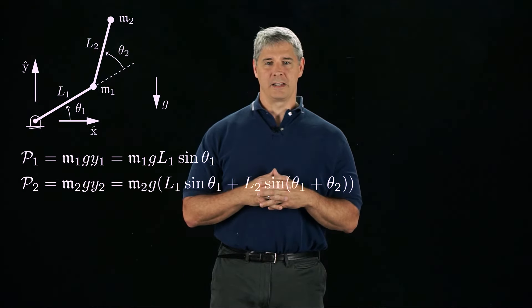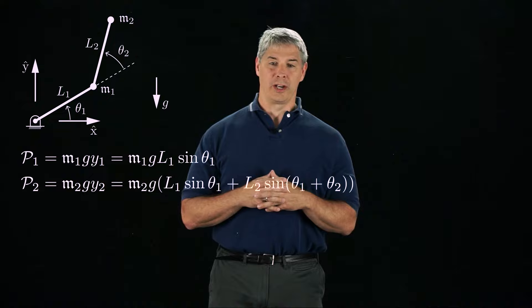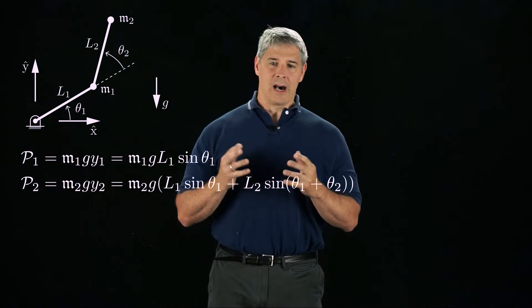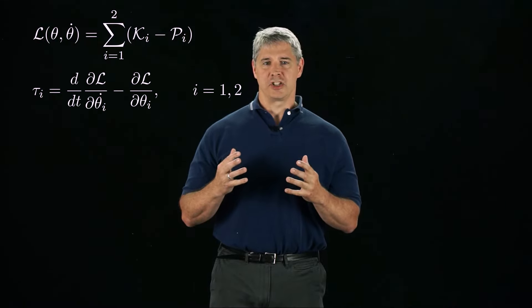The potential energy of each mass depends only on its height, or its y coordinate. Now we can calculate the Lagrangian as the sum of the kinetic energies minus the potential energies of the links, and express the joint torques in terms of the derivatives of the Lagrangian.